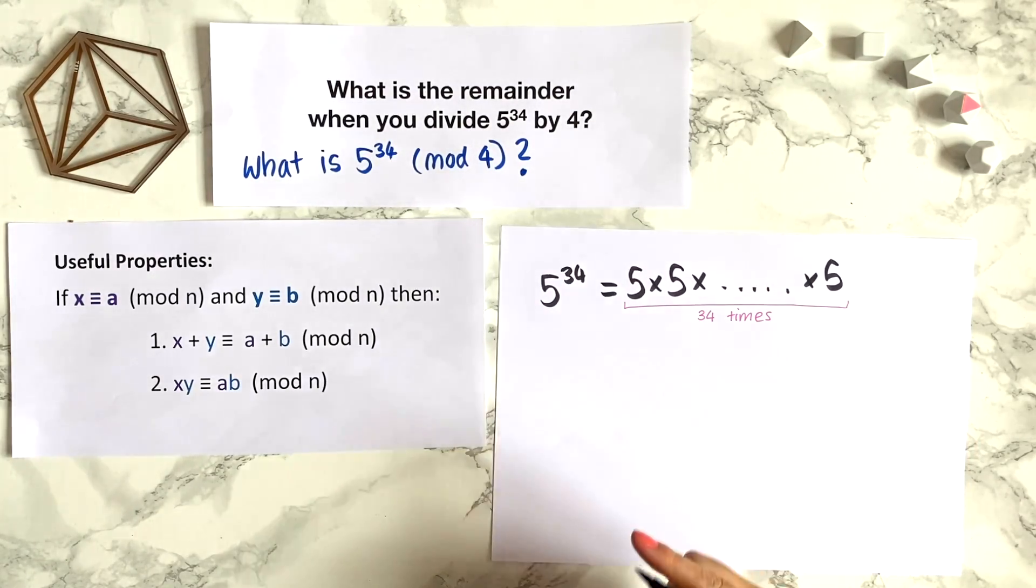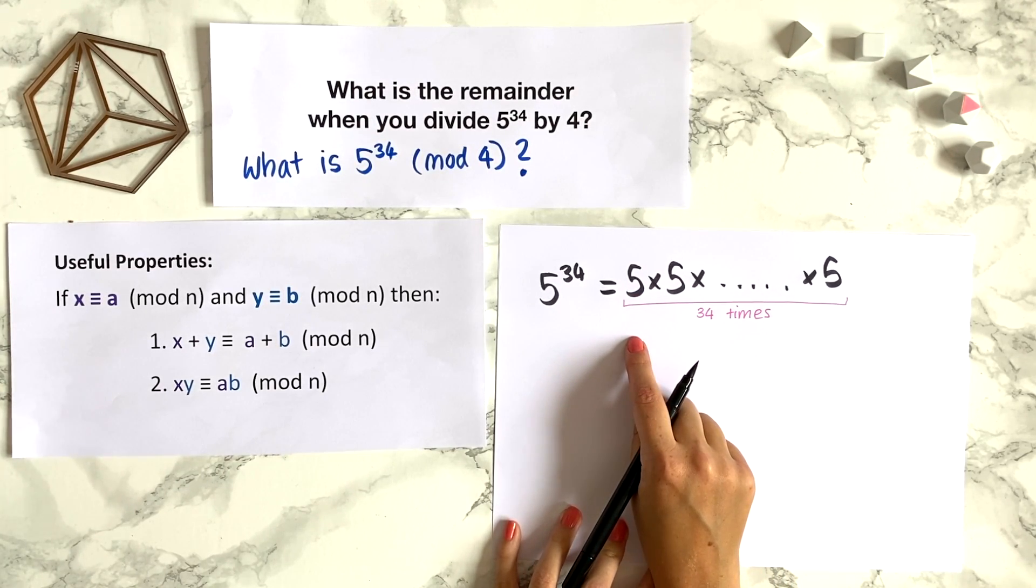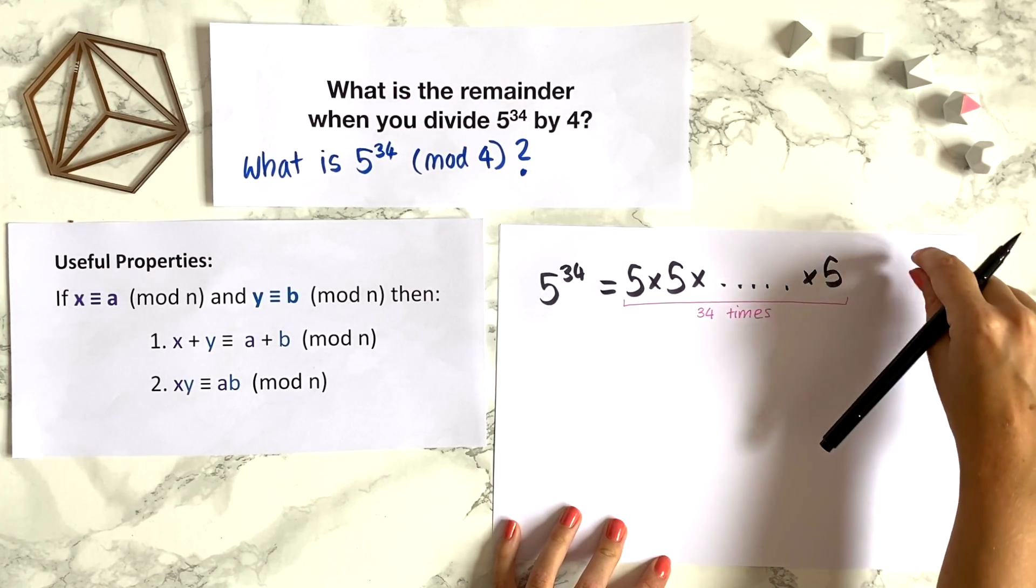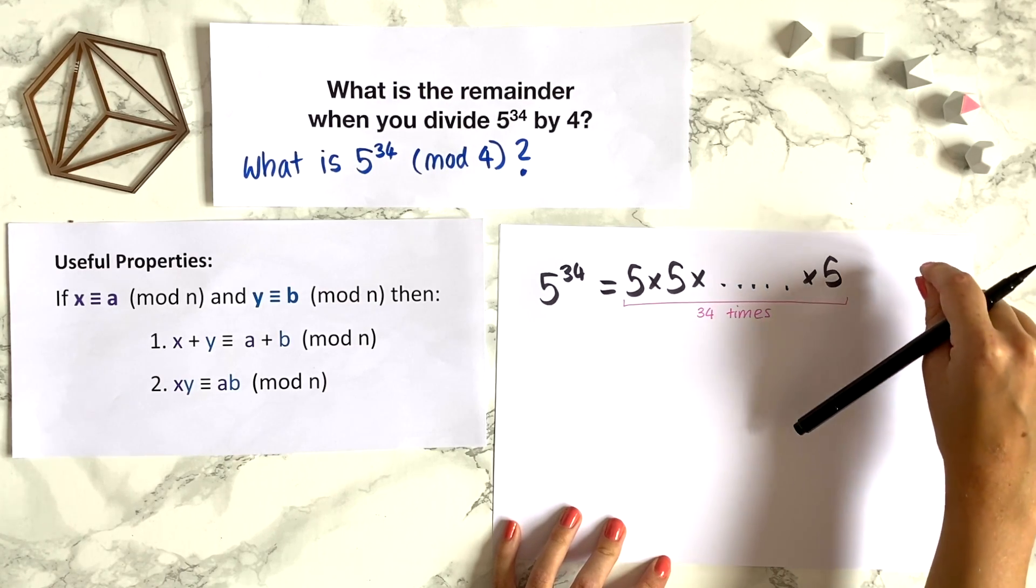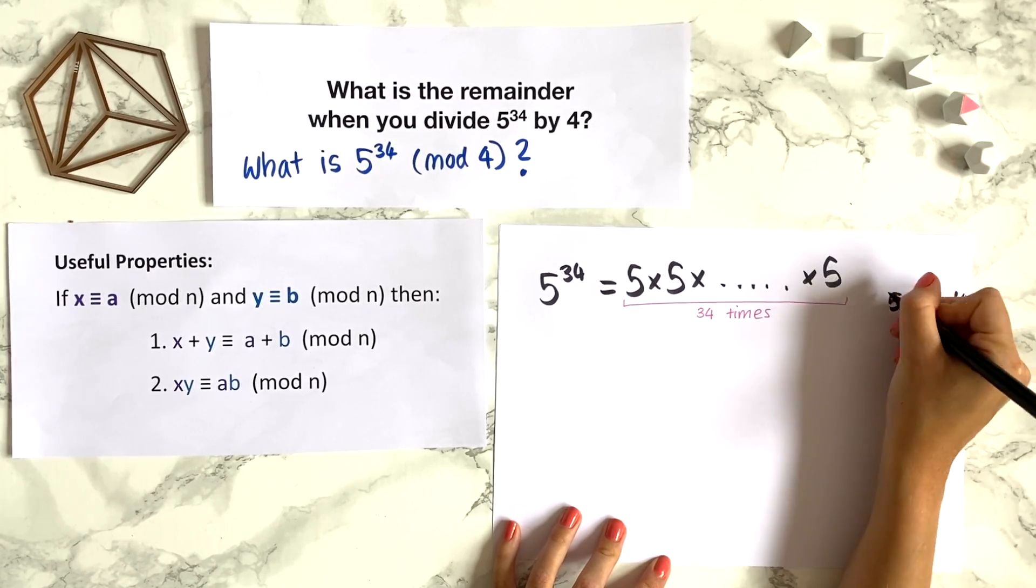And this is quite helpful because 5 modulo 4 is just 1. If you think where 5 would appear on a 4-hour clock, 4 would be at the top of the clock, and so 5 would be 1 around. So 5 is congruent to 1 modulo 4. I'm just writing this on the side as a reminder.